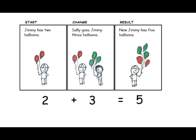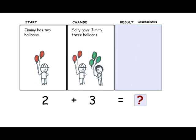The easiest problems to solve are those where the result is unknown. Jimmy starts with two balloons, then gets three more. The unknown result answers the question, how many balloons does Jimmy have now?